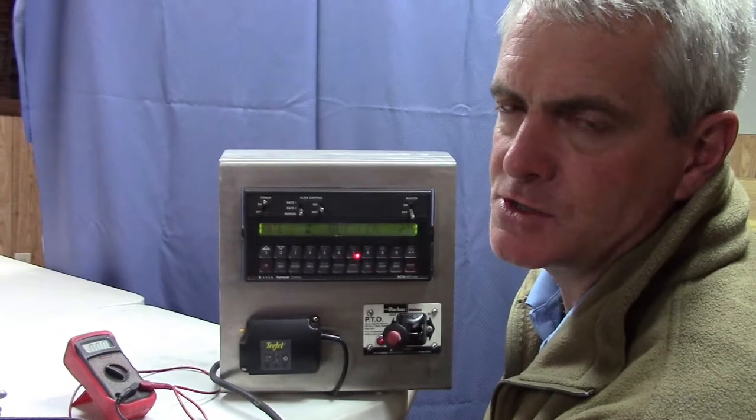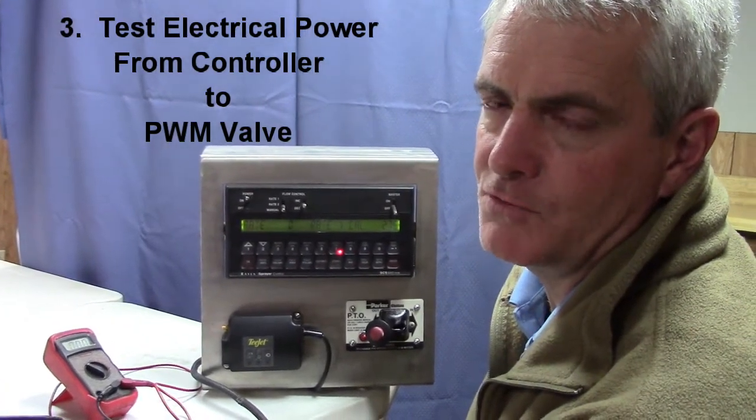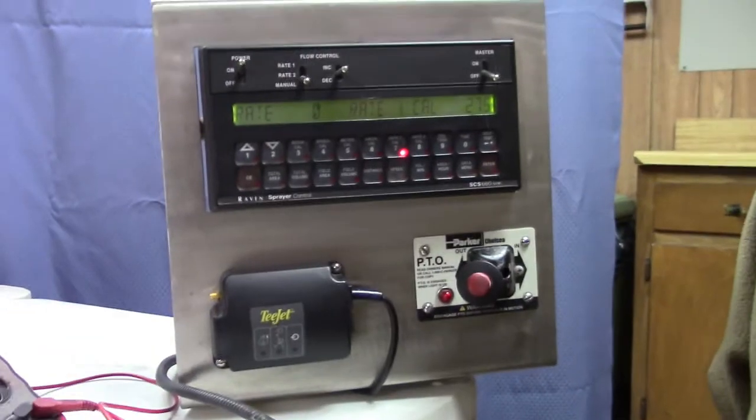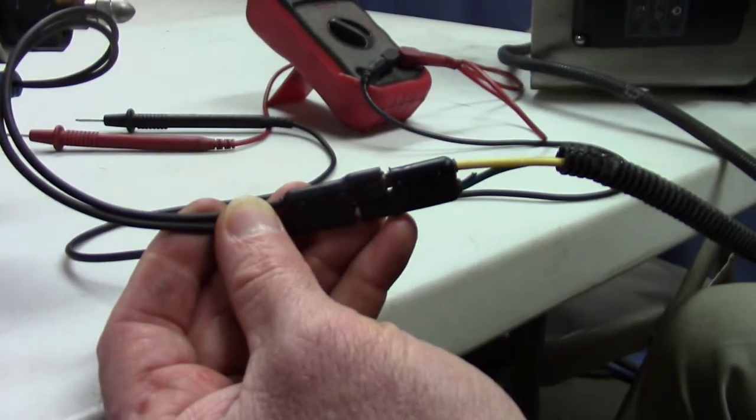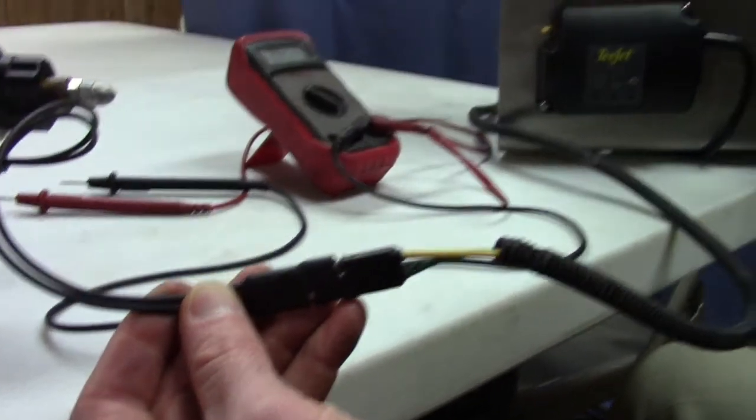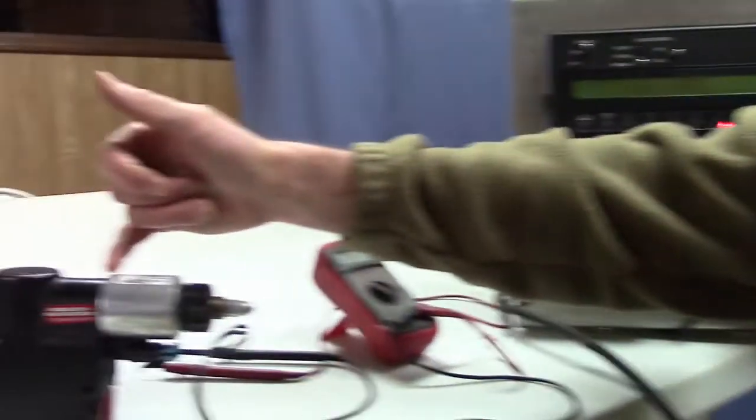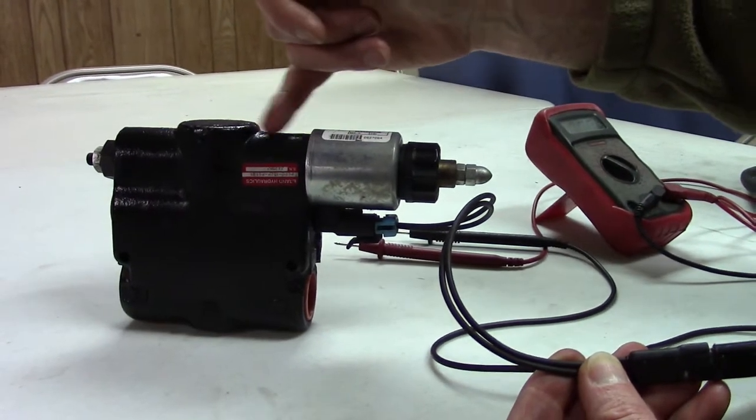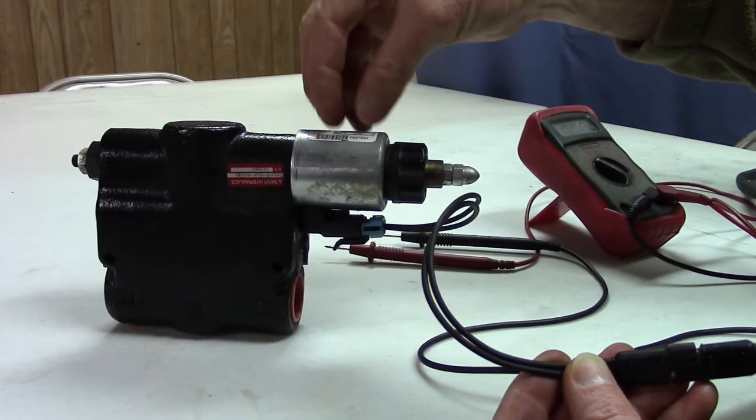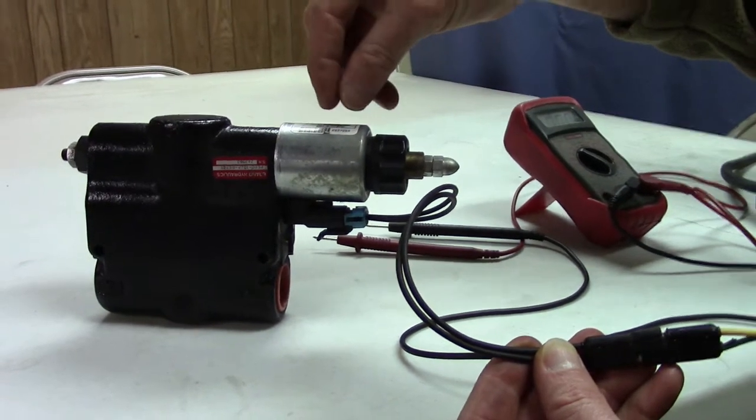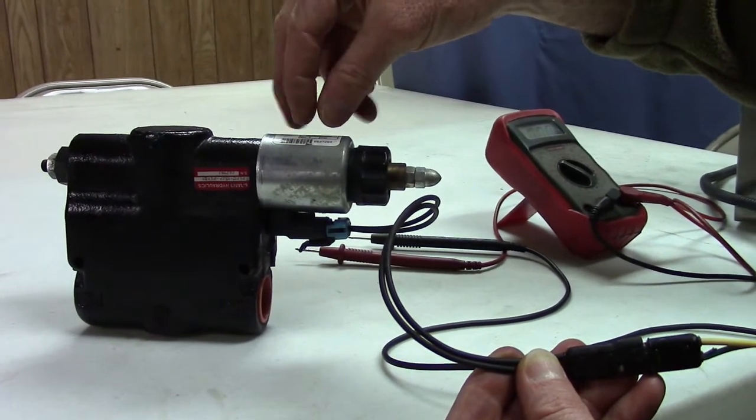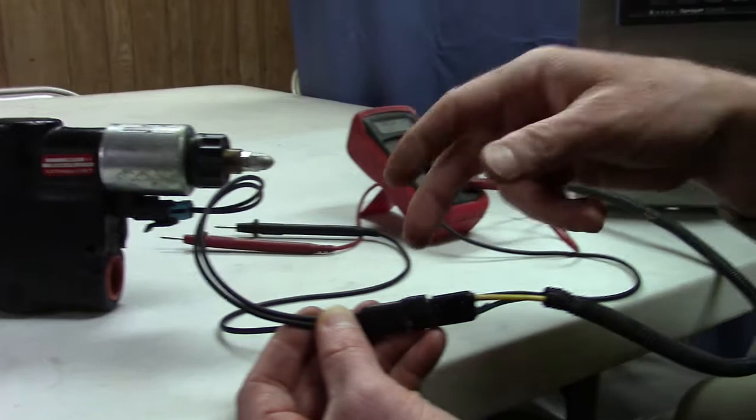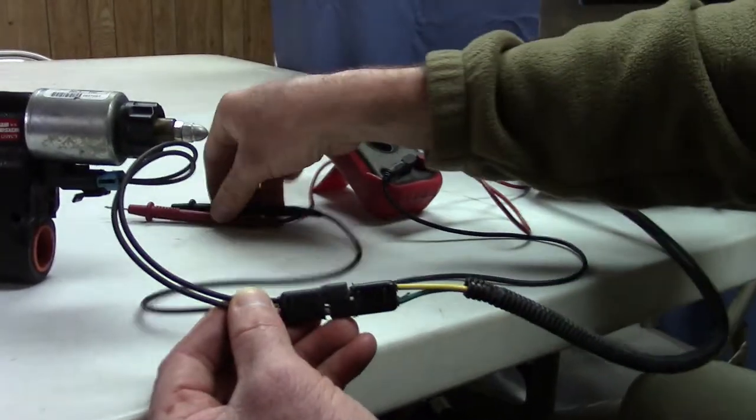This is a procedure on how to test that the correct voltage is coming from your controller to operate the PWM valve. They recommend that you check this voltage to the PWM valve under a load. The reason they want you to do it under a load is because it takes amps or electricity to work this plunger inside this valve. When you do it under a load, it's taking into account the voltage that's being needed to work this valve. If you don't do it under a load, you might not have the correct voltage.